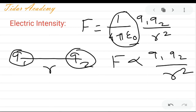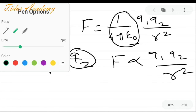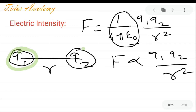The force between these two charges may be attraction or repulsion. We can say that Coulomb force may be attractive as well as repulsive. But gravitational force is always attractive, never repulsive, because charge may be a like charge or unlike charge.